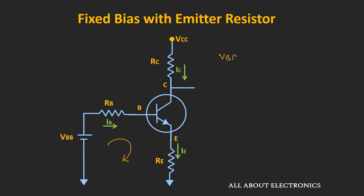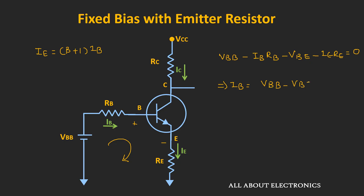Applying the KVL equation, we can write: Vbb - Ib·RB - Vbe - Ie·Re = 0. Now here, we know that this emitter current IE can be given as (β+1) times Ib. From this, we can find the base current Ib. And we know that the collector current Ic can be given as β times Ib.